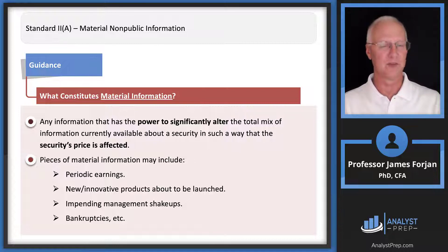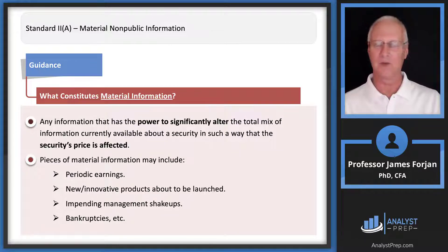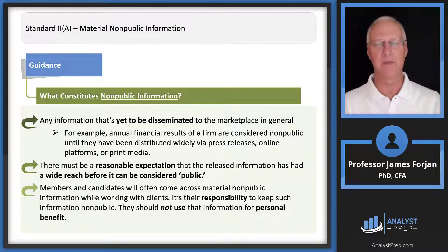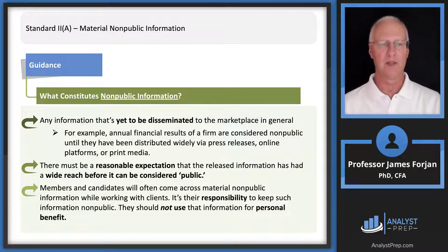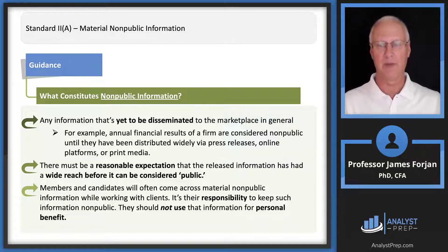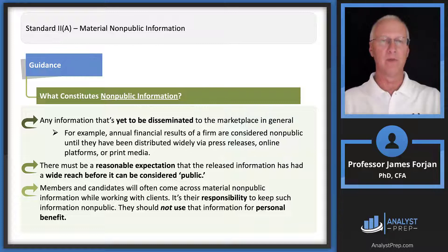The target firm's stock price doubled that week — that sounds like material non-public information that had yet to be disseminated. If the middle and upper executive teams didn't know about it, that's a clear sign it had not been disseminated. What is considered public information? It must be able to reach a wide audience, and there must be a reasonable expectation that once released, the information is truly out there.